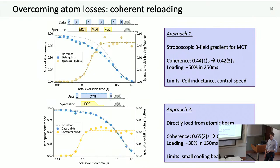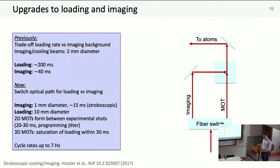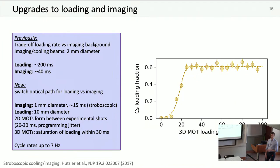At the time we thought this was limited by small cooling beams. Since then we've upgraded the system. We now have a separate imaging and loading path. Our imaging beams need to be small to reduce scatter, but you want a large trapping beam. Now we just switch between these using a MEM switch: one millimeter imaging, 10 millimeter loading. We image much faster, down from 40 milliseconds to 15 milliseconds, and load much quicker, from 200 milliseconds to 30 milliseconds. This gives us cycle rates up to about seven hertz.